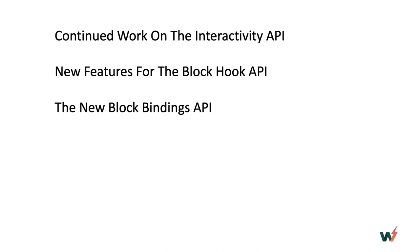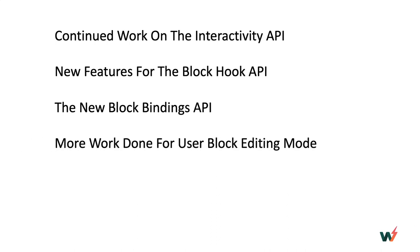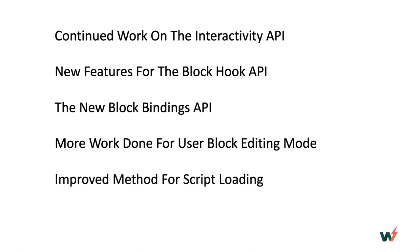In this version of WordPress there is a new Block Bindings API, which is a real time saver because you don't have to create a custom block anymore. You can just use this API to connect a core block like a paragraph to post metadata. Work is also continued on the user block editing mode, which deals a lot with block locking. There's an improved method for script handling and there's new WP Admin notification functionality.